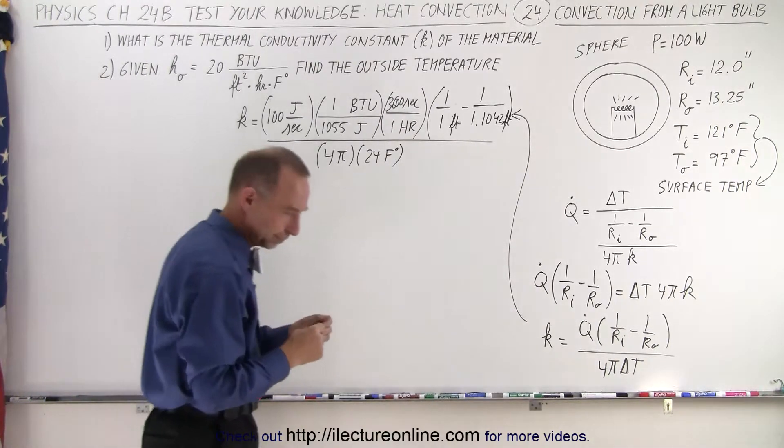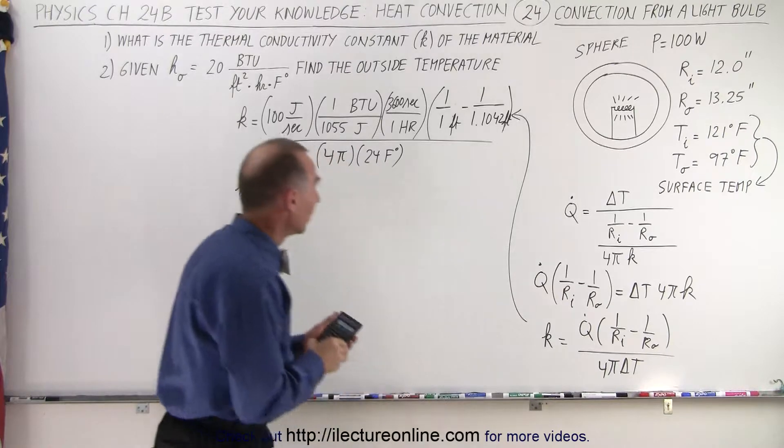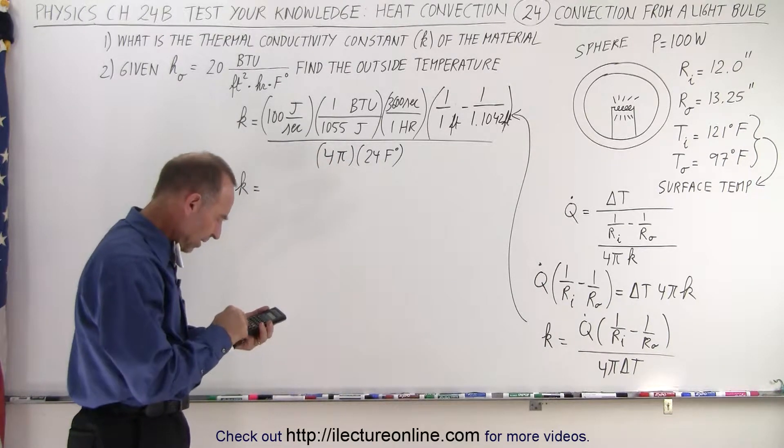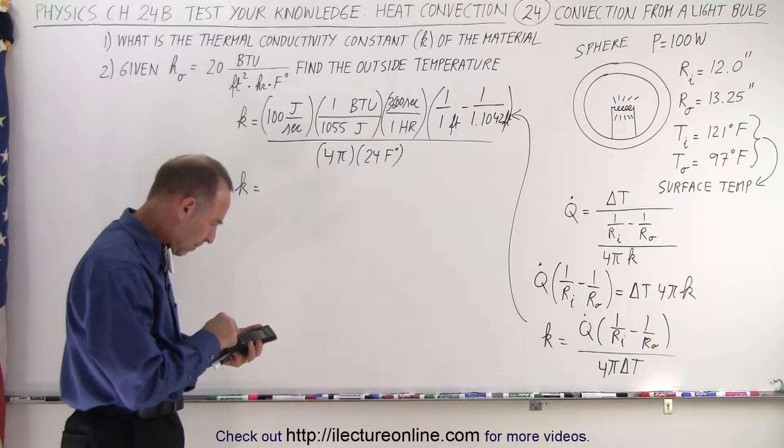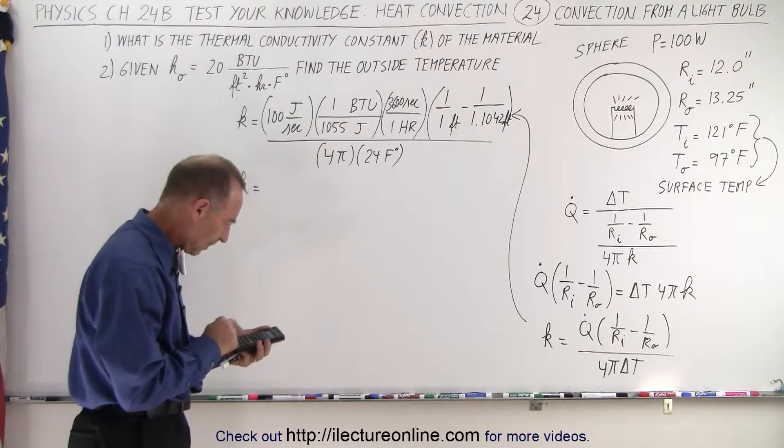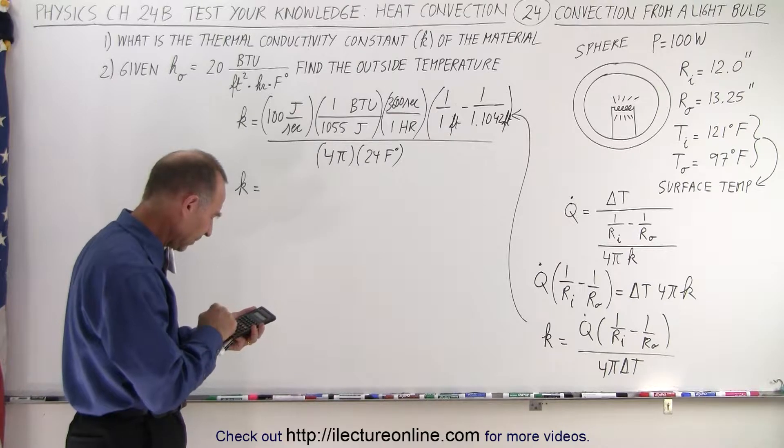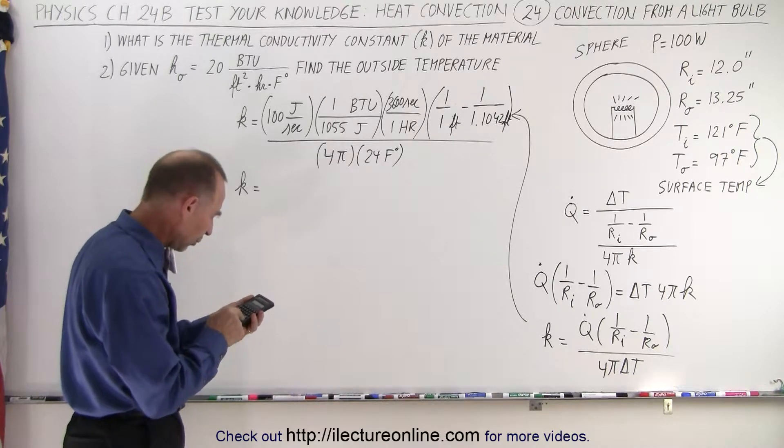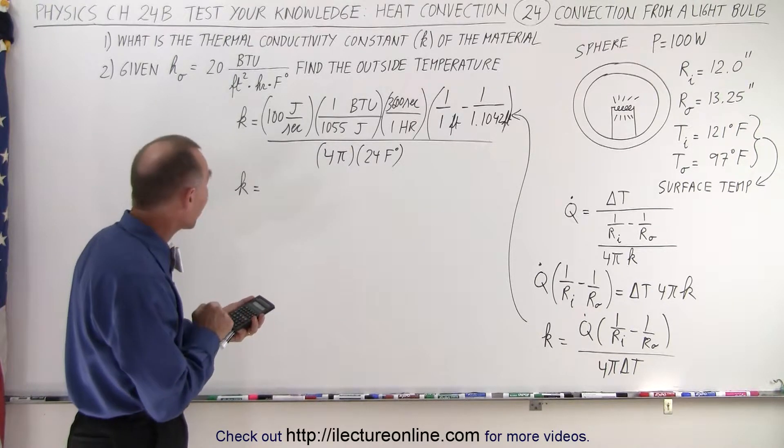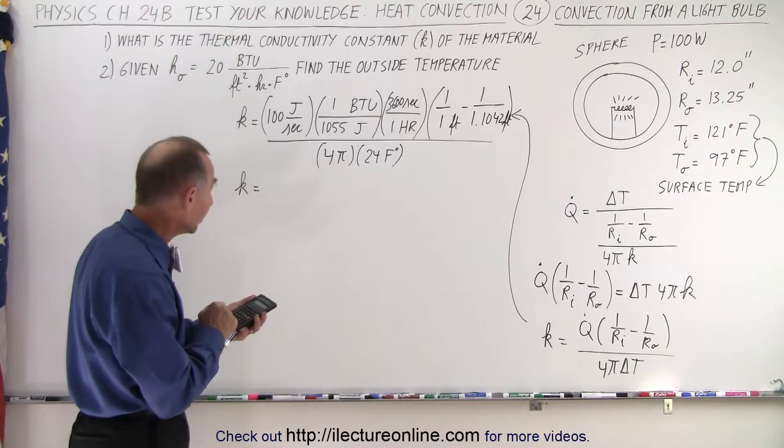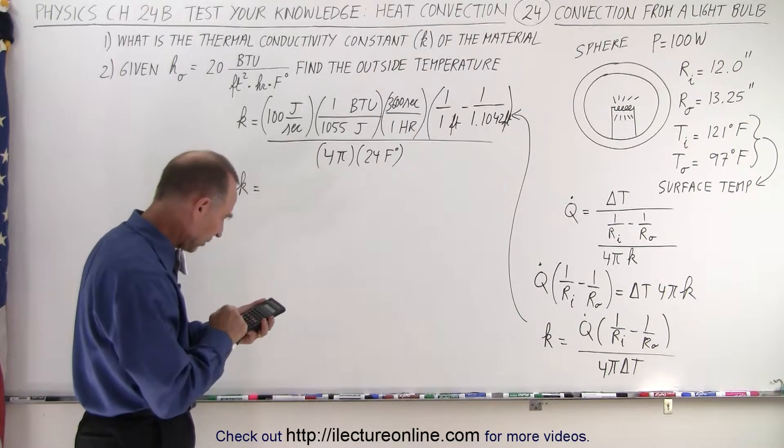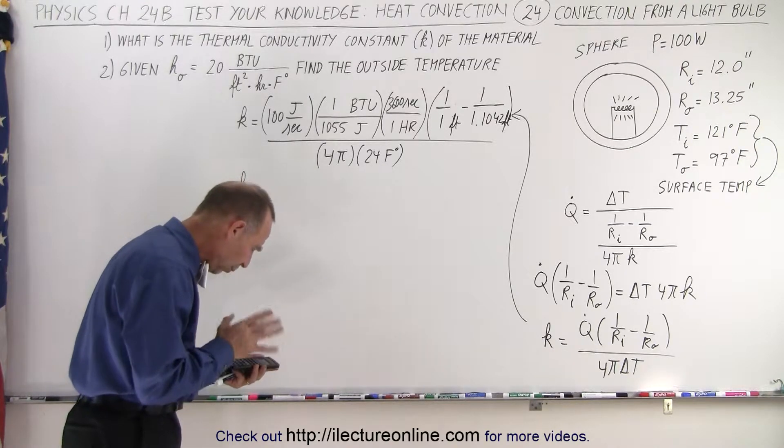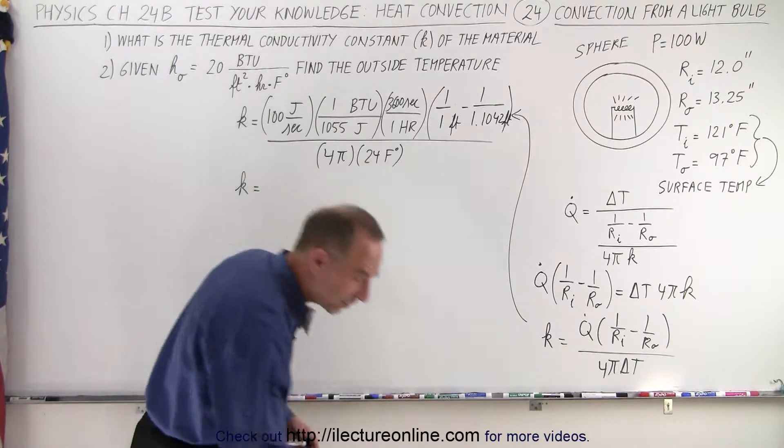Now we're ready to calculate K. K is equal to, so 1 divided by 1.1042 minus subtract it from 1, multiply that times 3,600, divide by 1,055, and multiply times 100, divide by 4, divide by pi, and divide by 24, and I get 0.107.